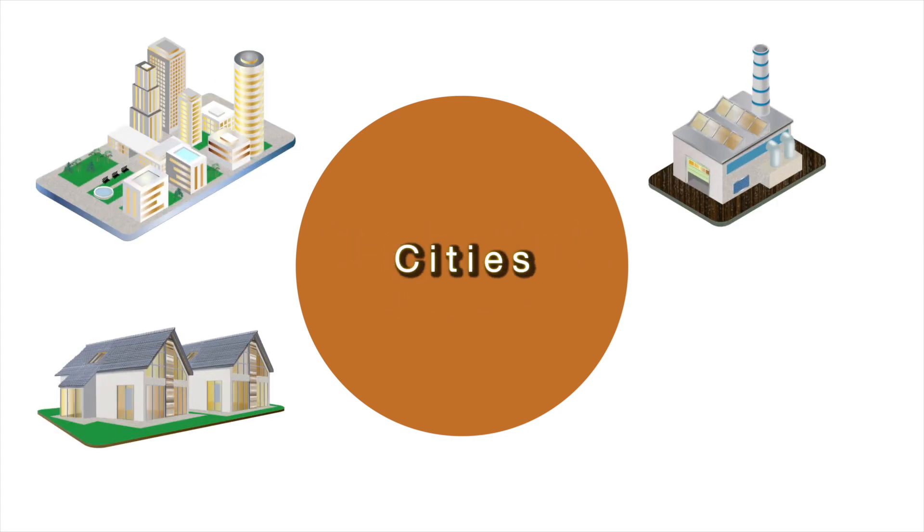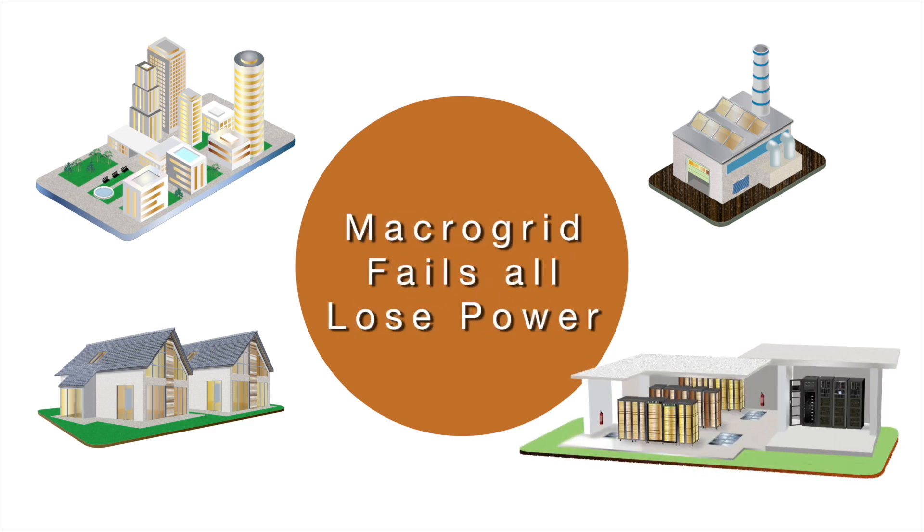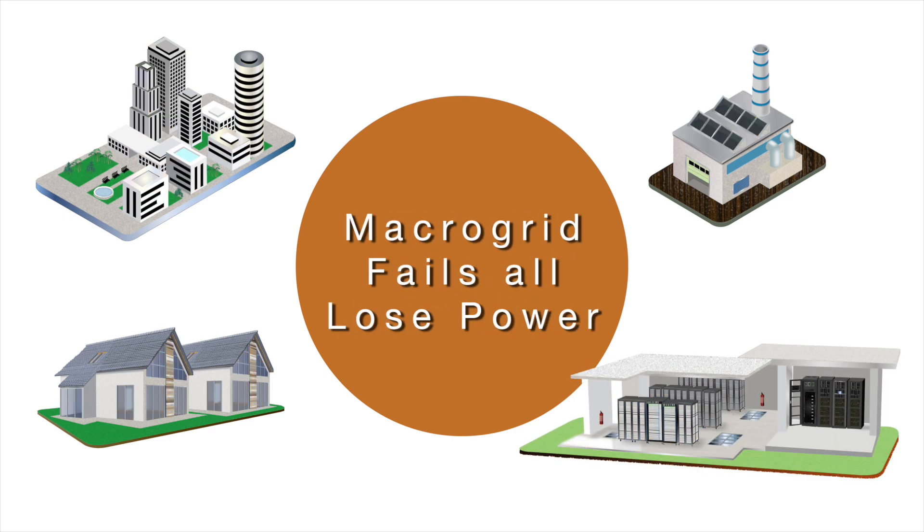industrial plants, medium-sized cities, or data centers. When the macrogrid fails, all these local loads can lose power.